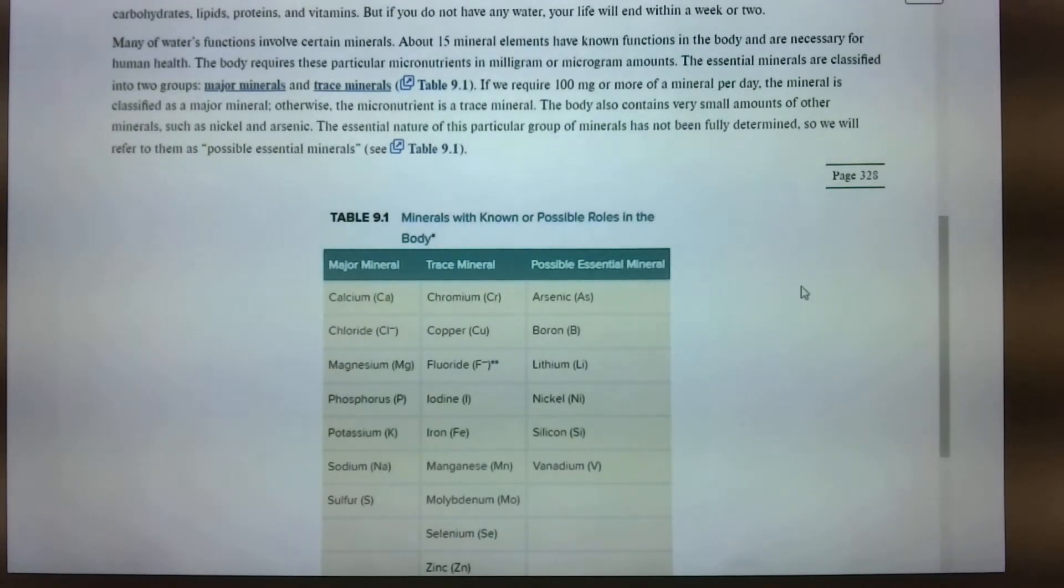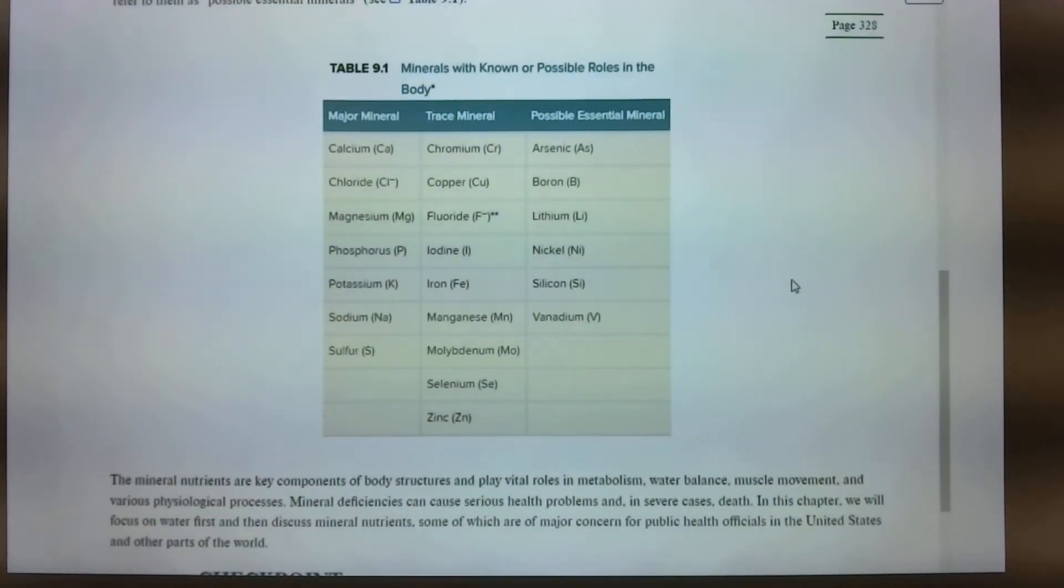Okay. The body also contains very small amounts of other minerals, such as nickel and arsenic. The essential nature of this particular group of minerals has not been fully determined, so we will refer to them as possible essential, kind of like choline, vitamin-like. Okay. Moving forward. So you see here, major minerals, trace minerals. We're just going to talk about it. We're going to touch base on a few of these. We're not, there's really no function. I mean, as far as this class goes, we are not going to learn all of those. Okay.